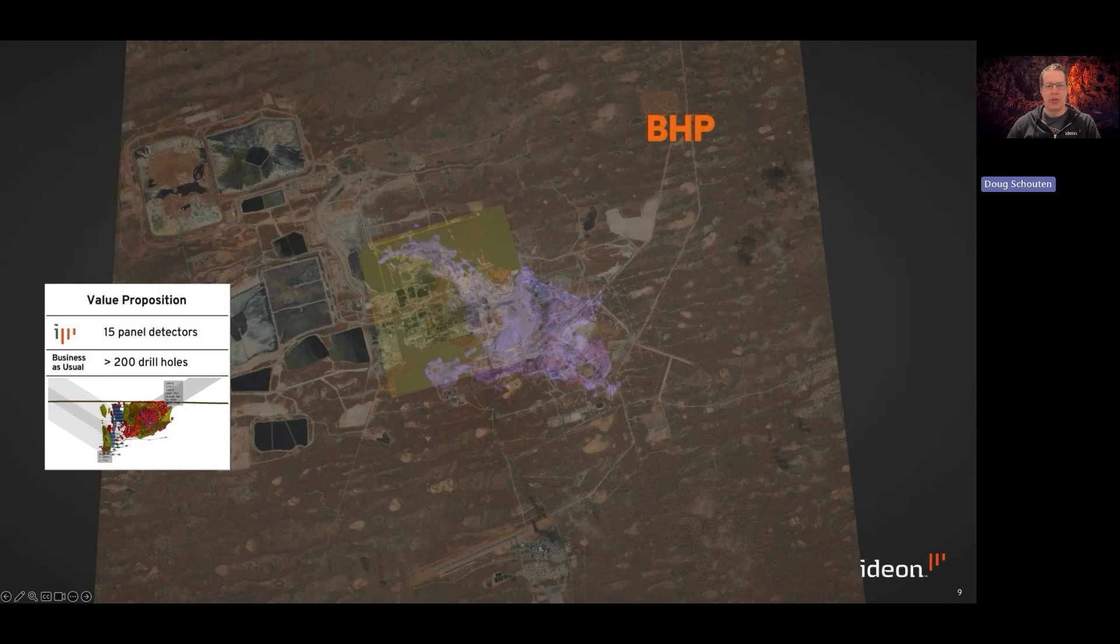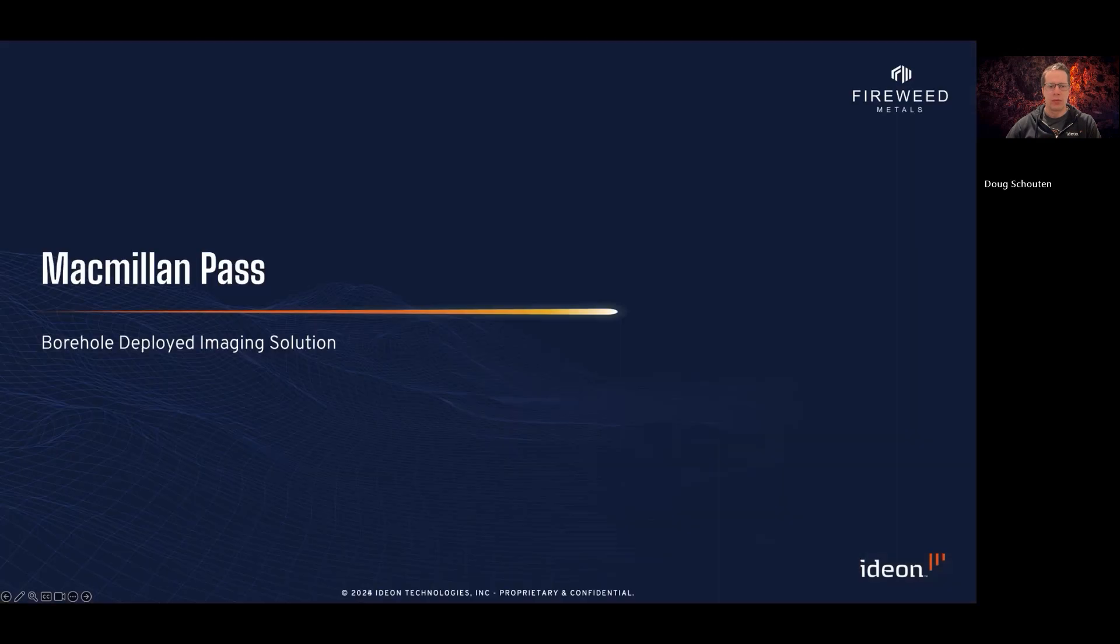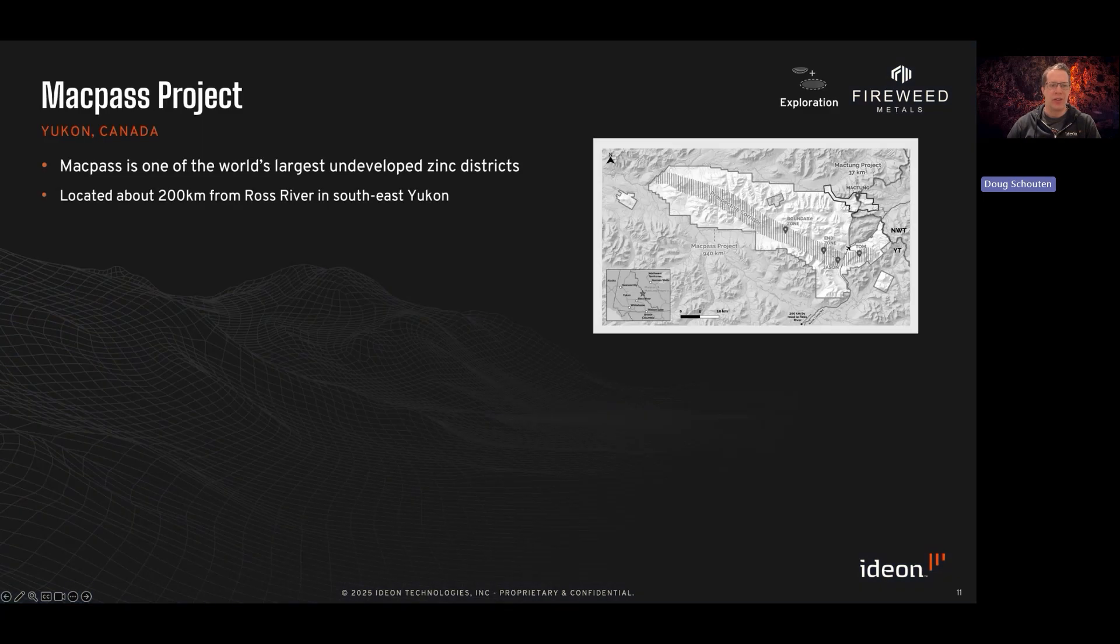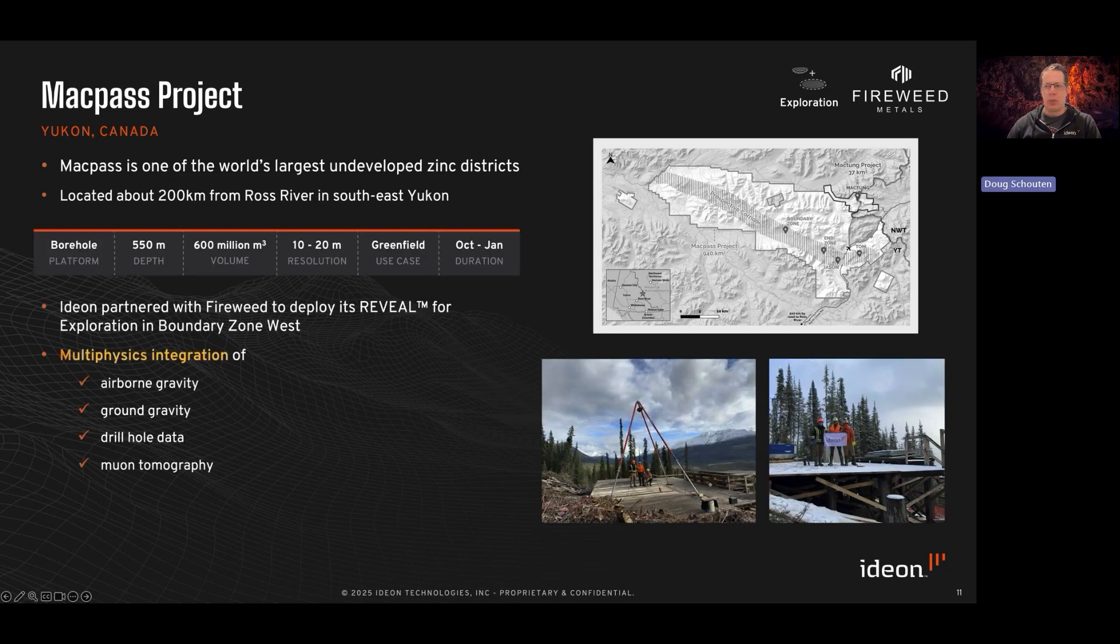The next case study I'll share is with Fireweed Metals at the McMillan Pass project in the Yukon. Fireweed Metals' Mac Pass project is one of the world's largest undeveloped zinc districts. It's located about 200 kilometers from Ross River, just on the border of the Yukon and Northwest Territories. We deployed our borehole detectors to enhance their greenfield exploration program by imaging at the periphery of drilled mineralization and also providing structural insights into the boundary zone of the ore body.